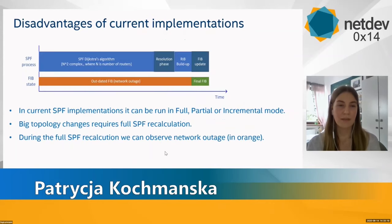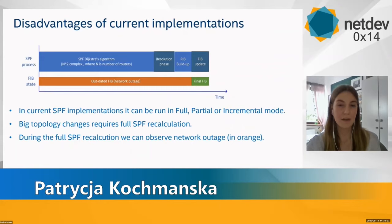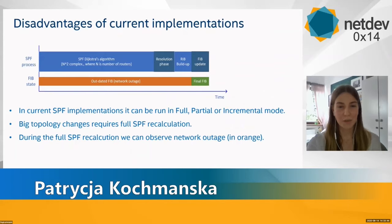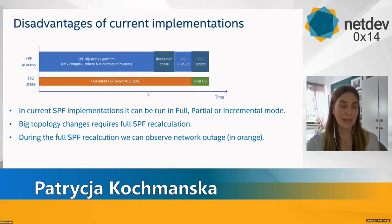The current OSPF implementation is 100% accurate, but has an area of improvement when it comes to recovery time after multiple link failures. To optimize the problem of recovery time, SPF calculations are not only run in full mode, but there are also partial or incremental modes of SPF recalculations in which not all of the SPT is recalculated. However, full SPF recalculations still occur and lead to an outdated forwarding information base and network outage. Here we can see on which stages of OSPF operations the network may be in an inoperable state, and as we can see, this is a relatively long period of time.